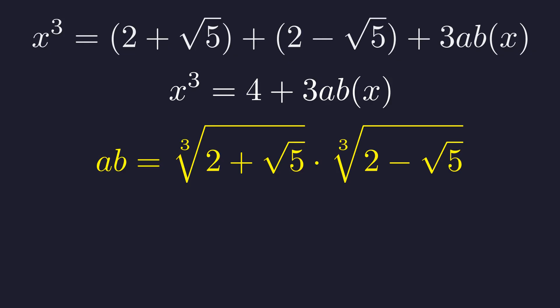Well, a times b is just the product of these two cube roots. Let's work this out separately. When you multiply cube roots together, you can combine them under a single radical. And look at what we have inside.